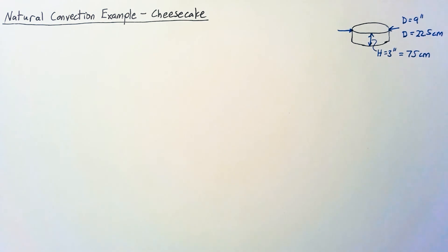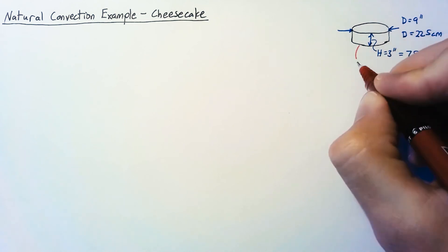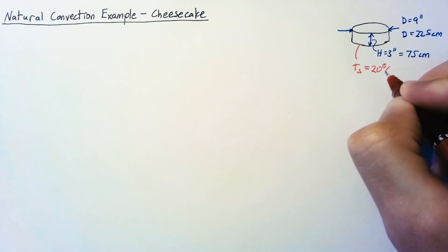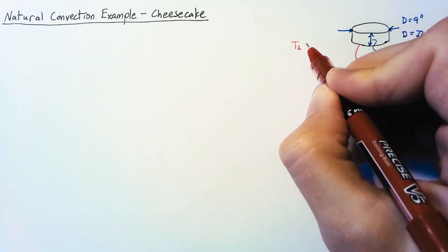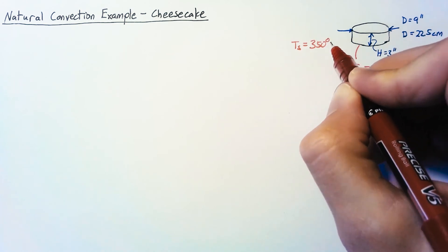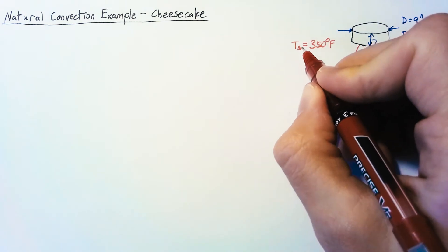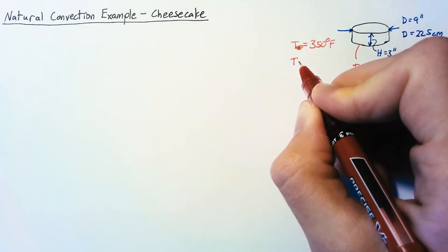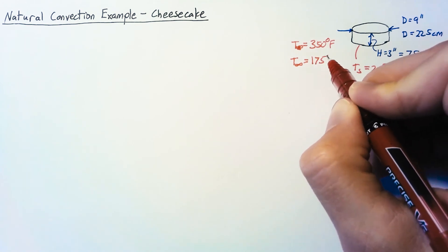Now whenever this cheesecake is first going in, it's going to be at room temperature and we're going to treat that room temperature as 20 degrees Celsius. The temperature of the surroundings since we've preheated the oven is going to be at 350 degrees Fahrenheit based on the recipe that I was able to find, but we're going to convert that to Celsius and our temperature in Celsius is about 175 degrees Celsius.